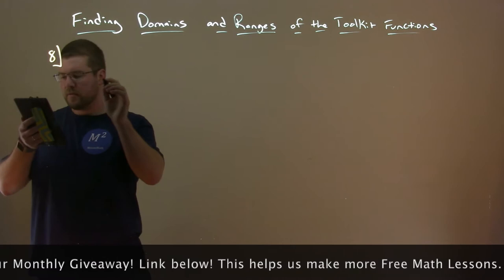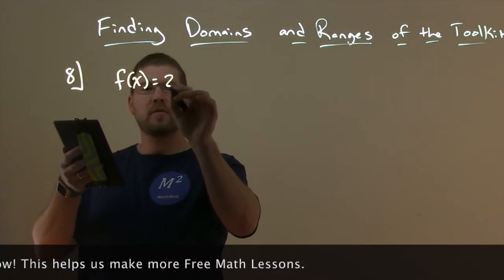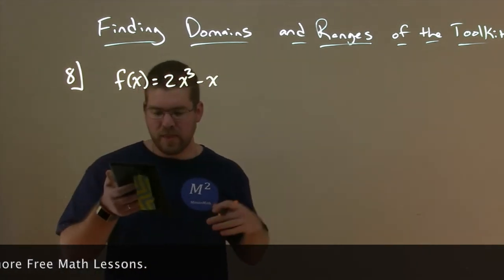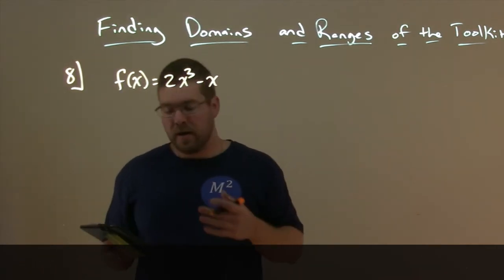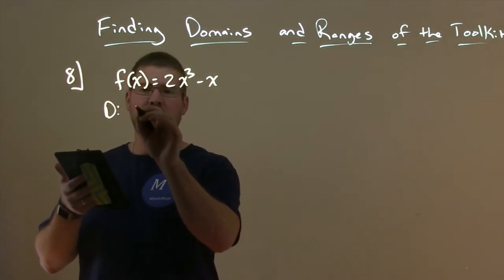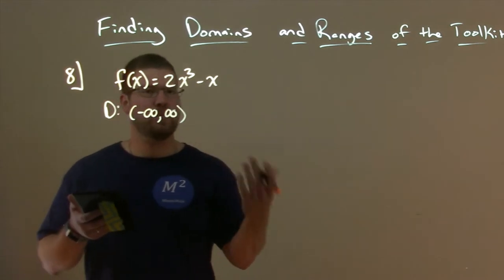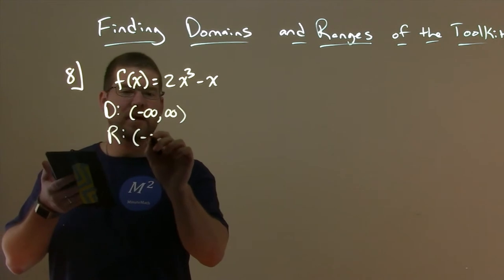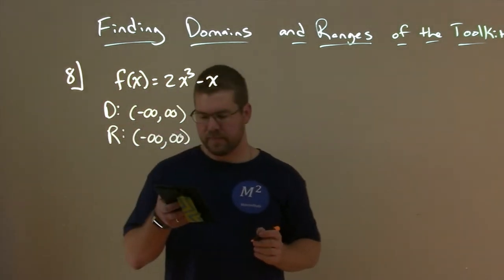Number eight. We're going to find the domain and range of f of x equals two x to the third minus x. This is a cubic function, so our domain is just all real numbers, from negative infinity to positive infinity — we're allowed to plug in any value we want. And since it's a cubic function, the range is also from negative infinity to positive infinity.